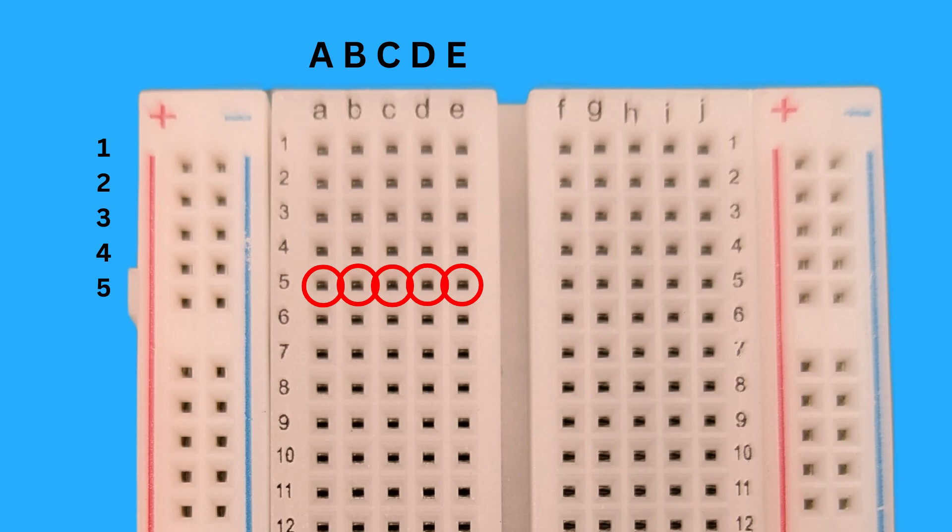A super important concept when using a breadboard is understanding how the holes are connected. Each set of five holes in a row, like A5, B5, C5, is connected electrically, meaning if you plug a wire into one, it will be connected to all the other holes in that row.